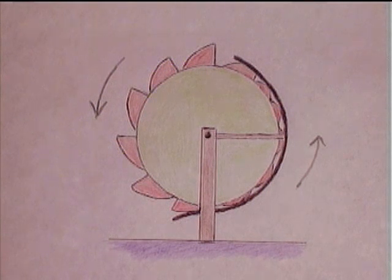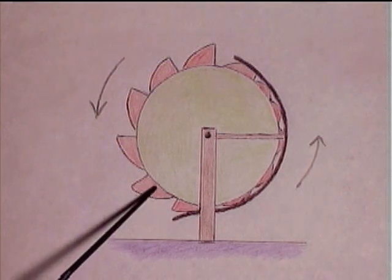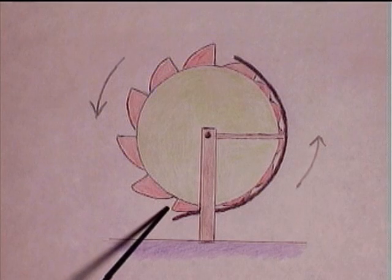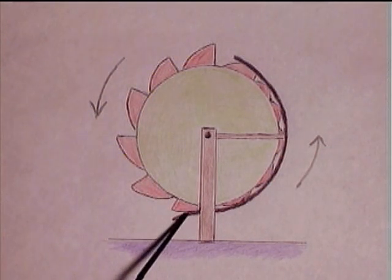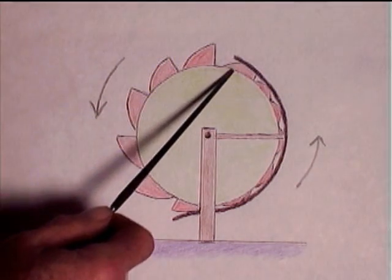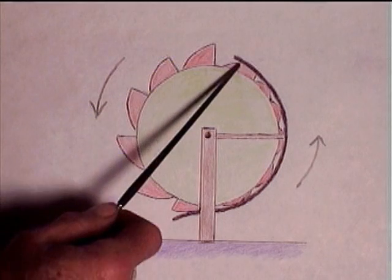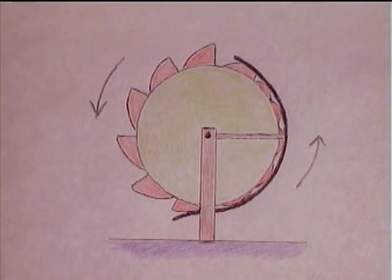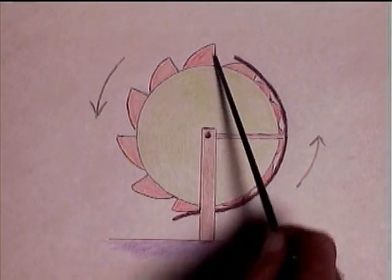When a protrusion reaches the bottom, it is forced upward by this rim. While that is happening, another protrusion on the top pops out. The water in the wheel just trades places back and forth.